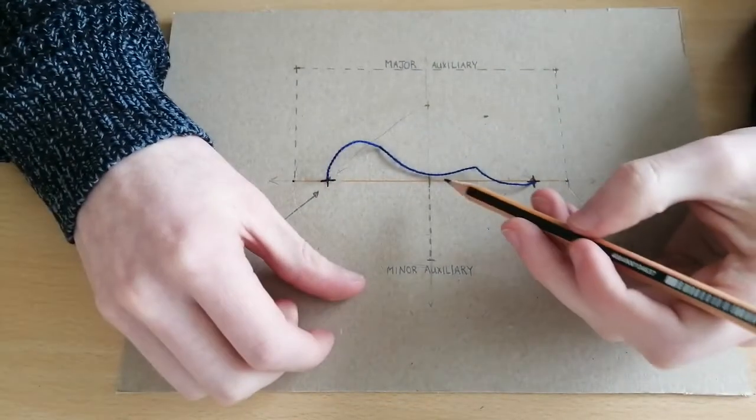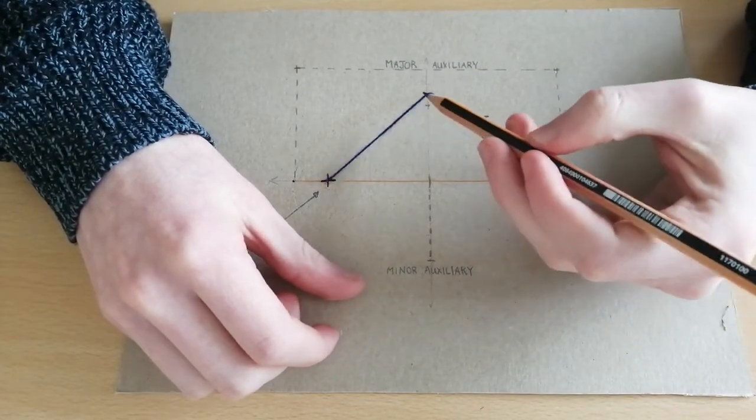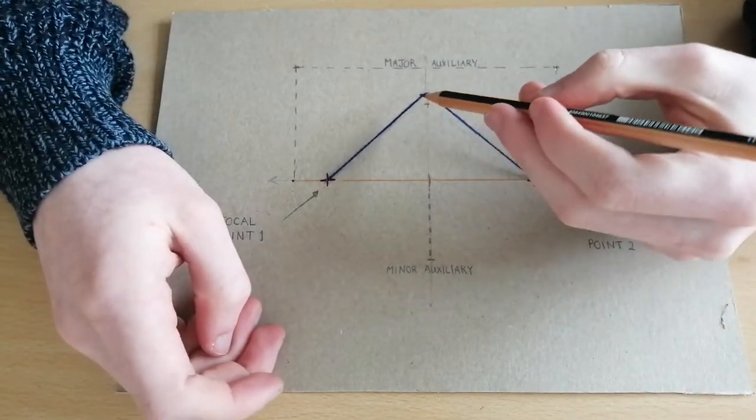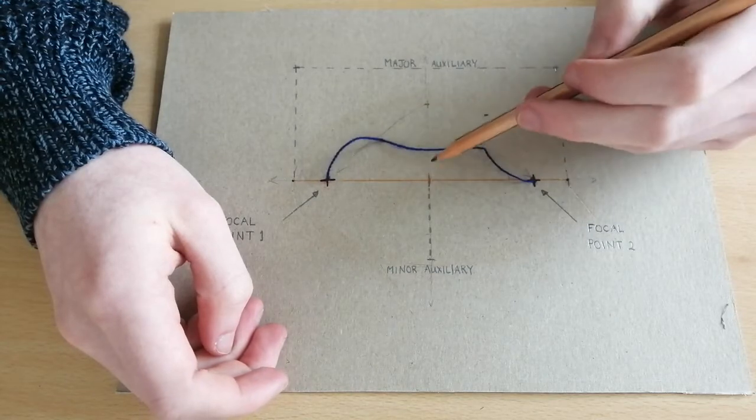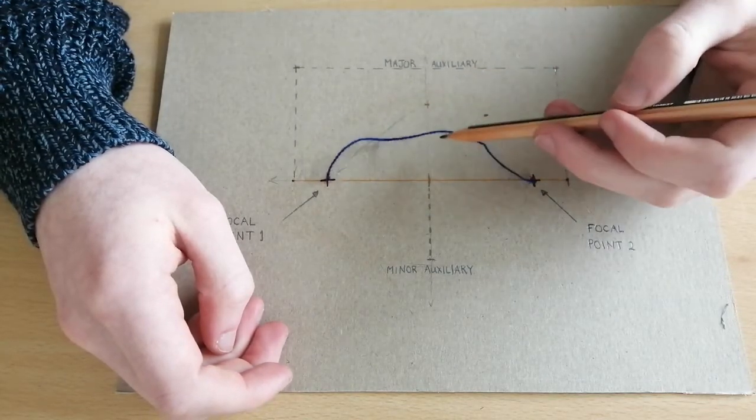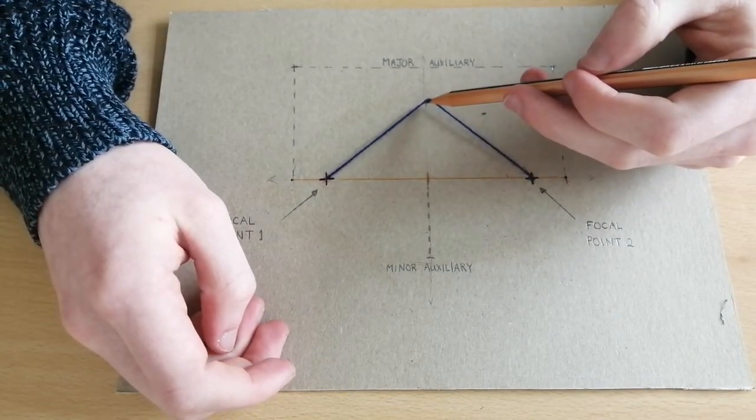Now, this blue string goes through our focal points 1 and focal points 2, and it is equal to the length of our major auxiliary.